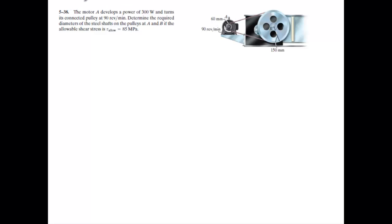This is a 5-38 problem. Here you have a motor that develops a power of 300 watts. It turns its connected pulley at 90 revolutions per minute. You want to determine the required diameters of the steel shafts at A and B and allowable shear stress is 85 megapascals.